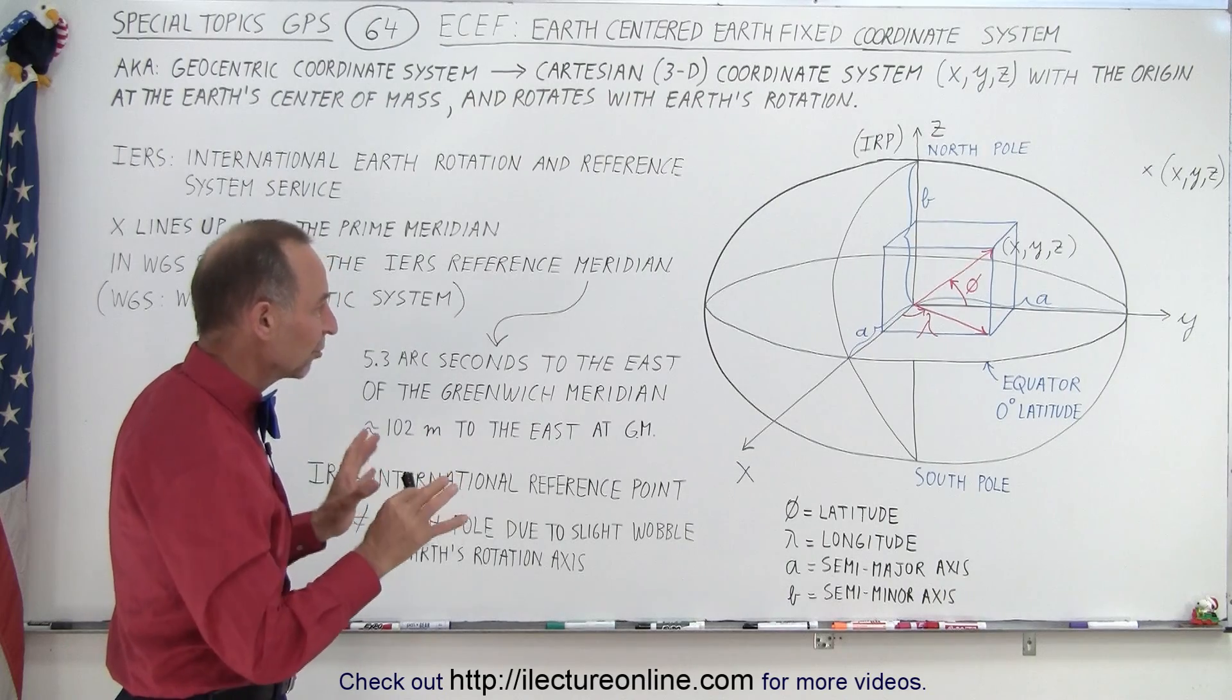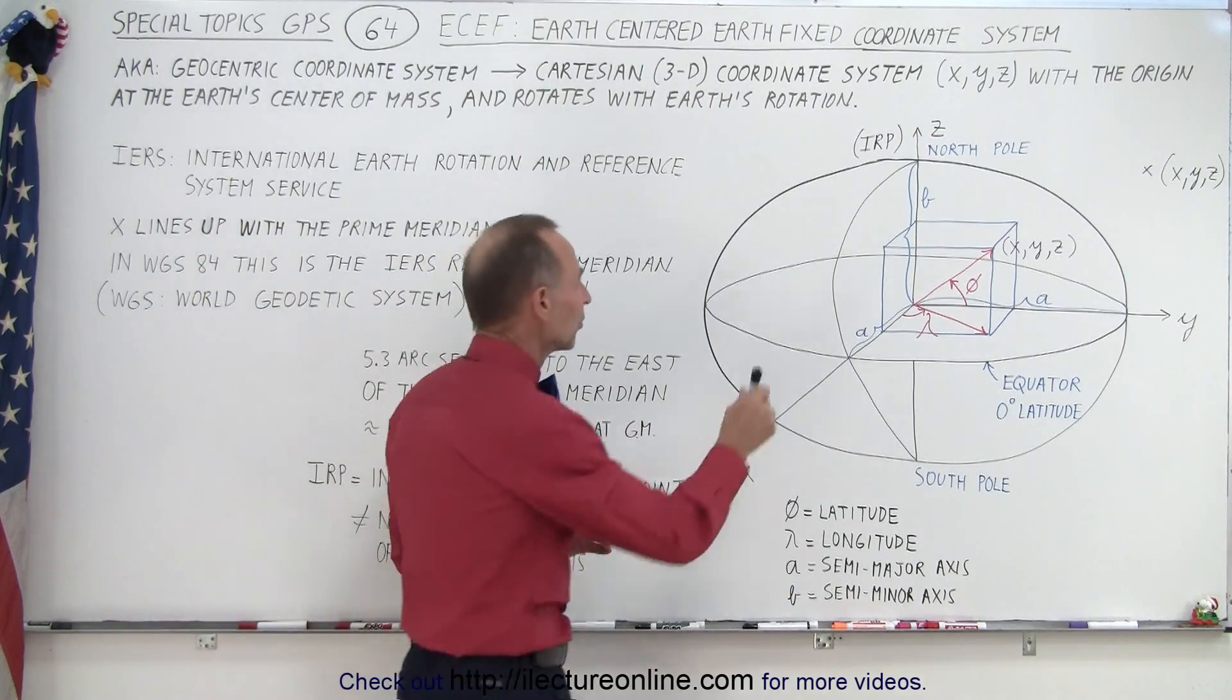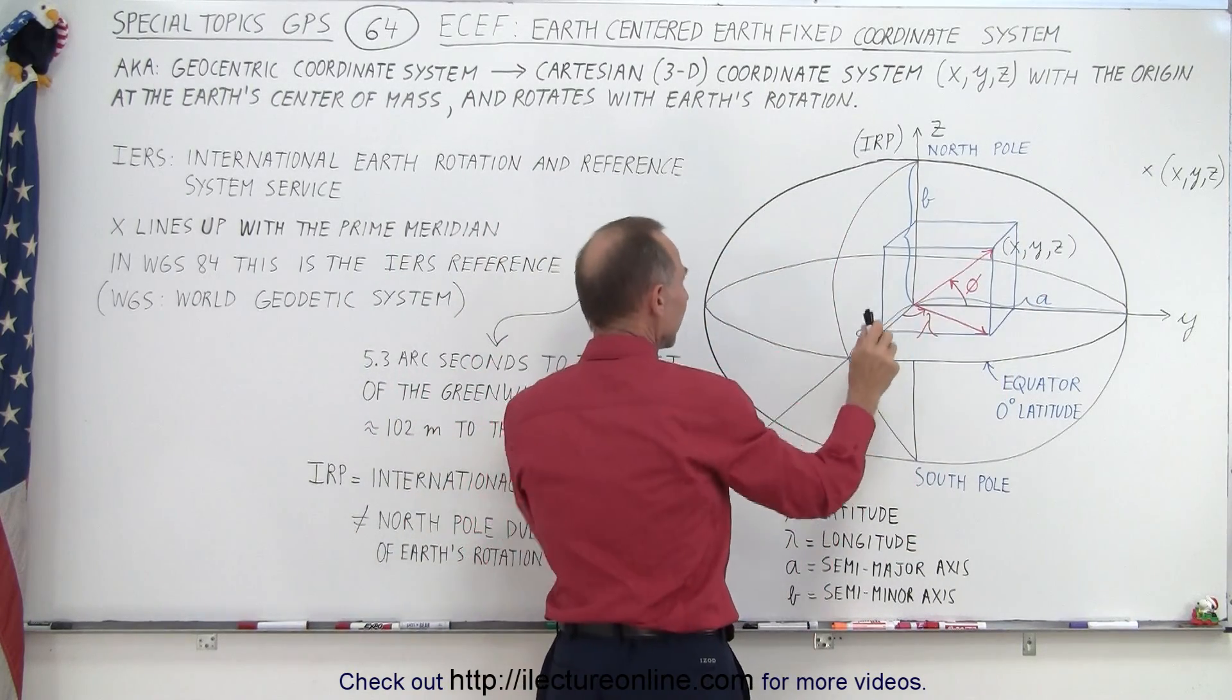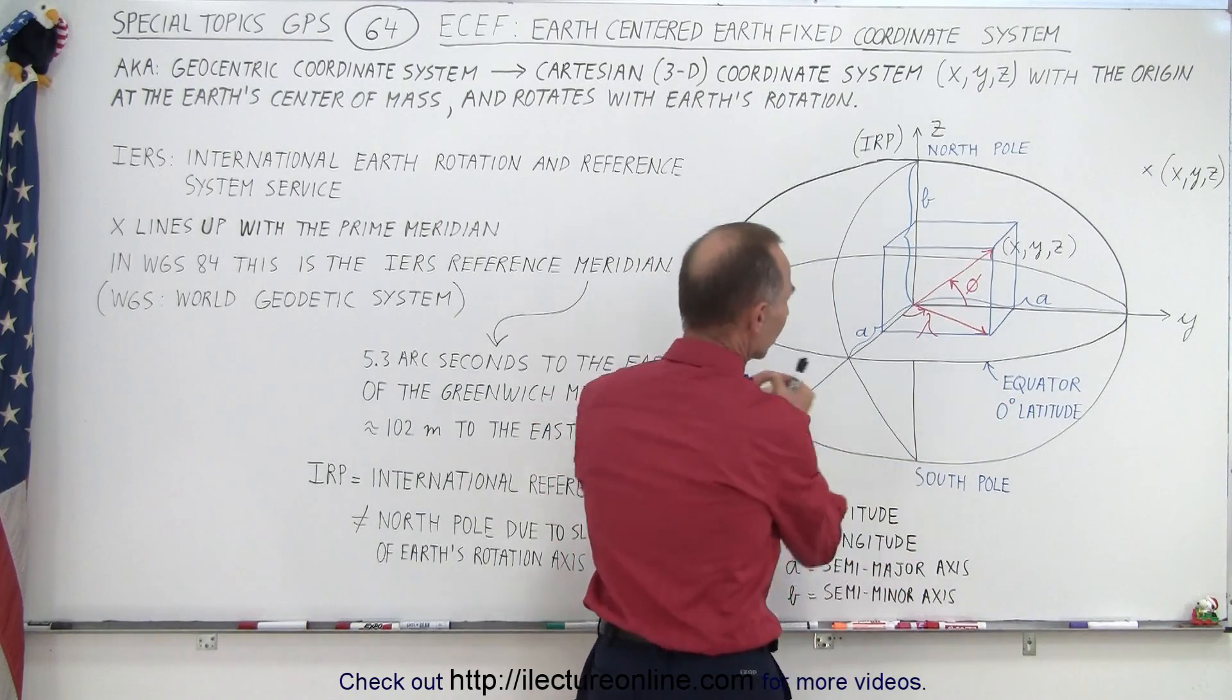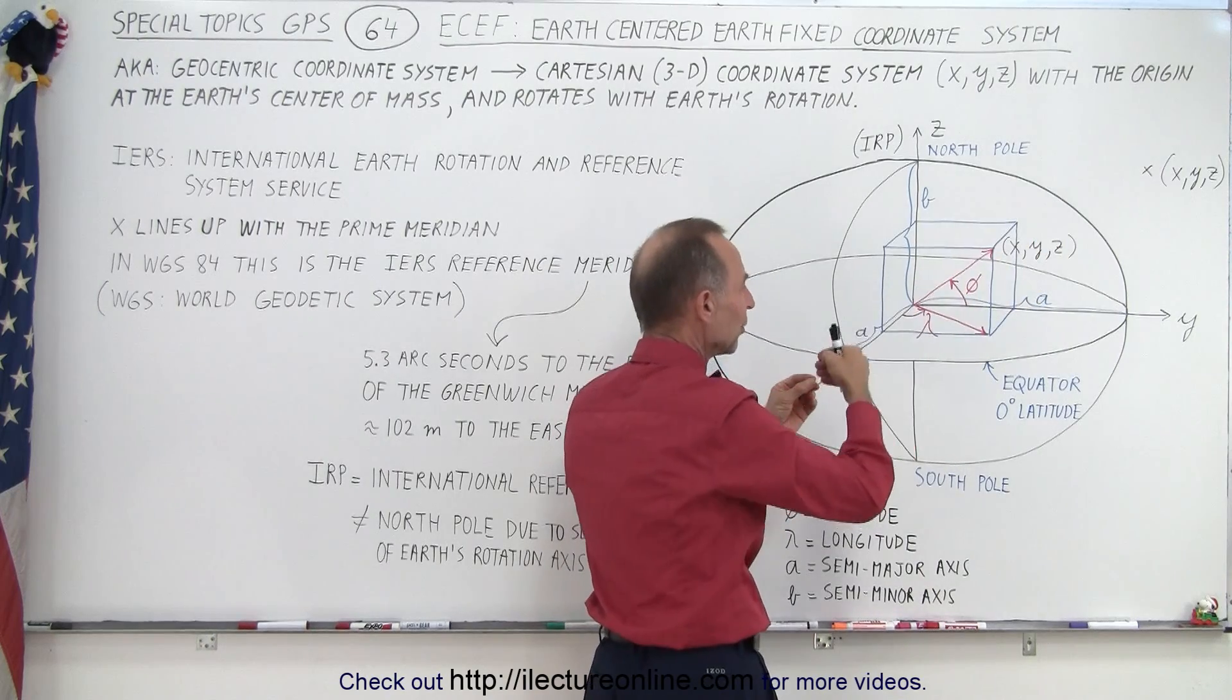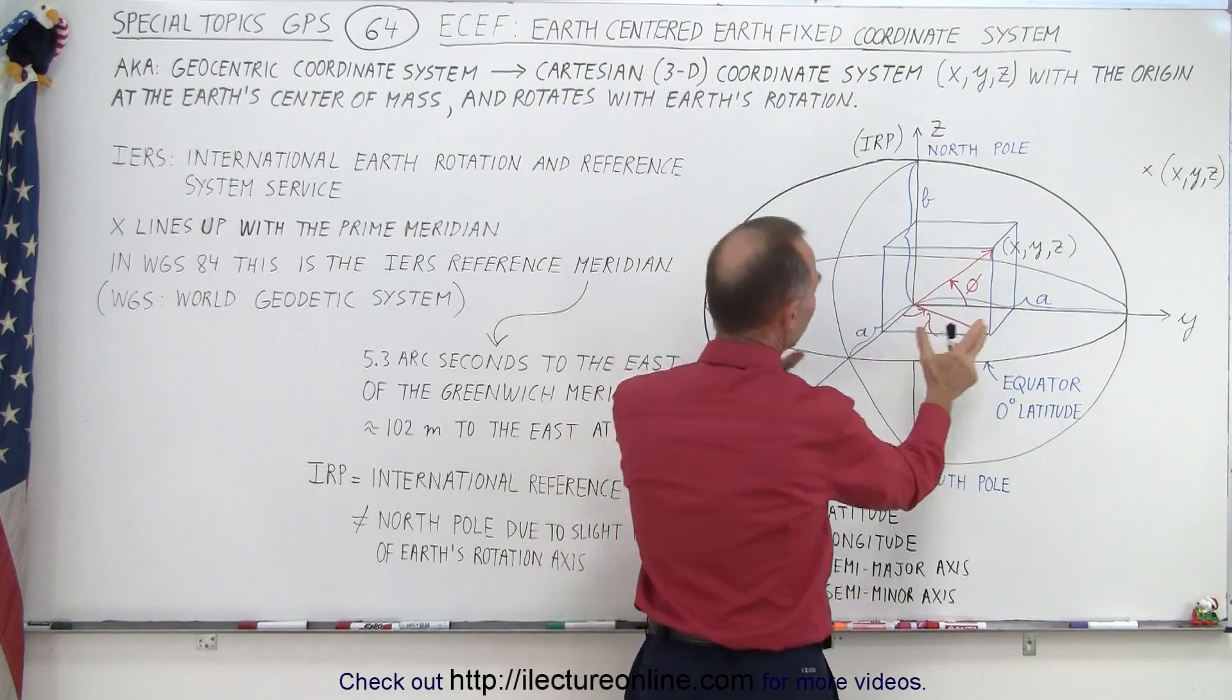So that is the coordinate system we use in GPS and that makes sense because our receivers are going to be located somewhere on the surface of the Earth and they're going to be turning or rotating along with the Earth's rotation. So it's better then to communicate with satellites knowing exactly where on the Earth we are with our receivers on that rotating Earth.